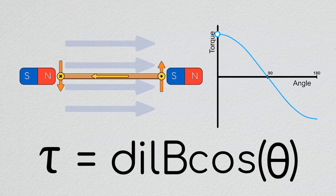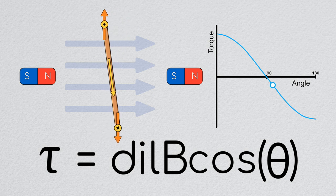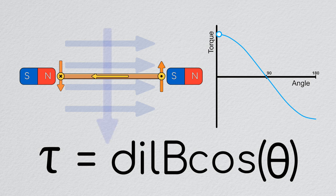Looking back at the animation we showed last episode, we can now plot the torque on the loop as it swings through a revolution. From this I want to point out two key ideas. Firstly, the torque is maximized when the coil is directly in line with the magnetic field.